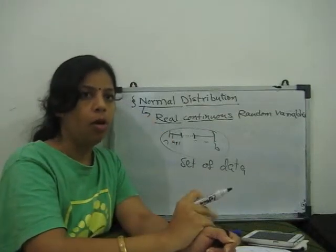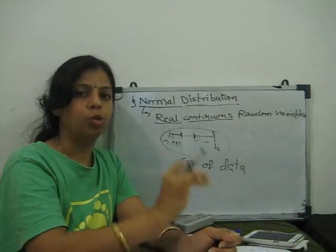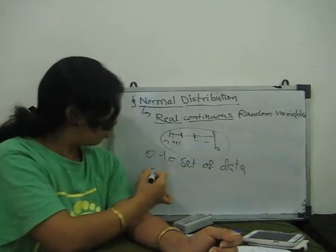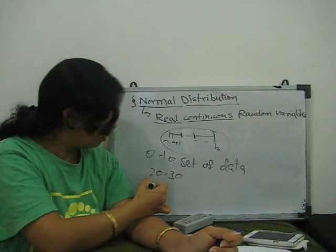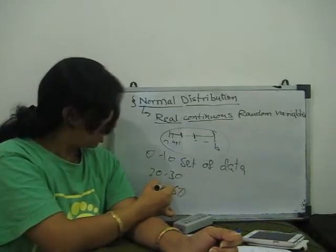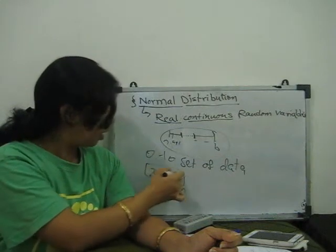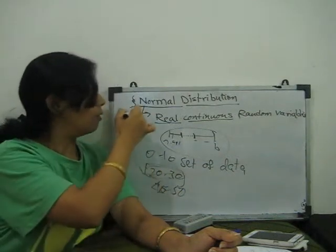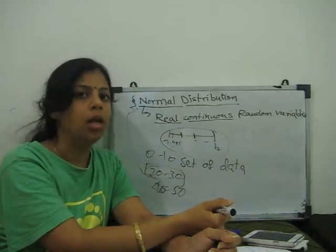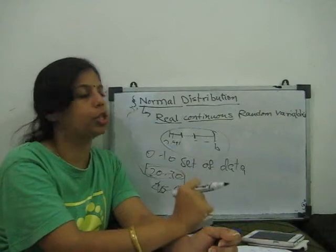For a concrete example of continuity: if we have 50 students' scores and data exists from 0 to 10, then data is missing from 20 to 30, and then resumes from 40 to 50 — for this missing range we cannot plot our normal distribution and we cannot find out the probability density function for this distribution.